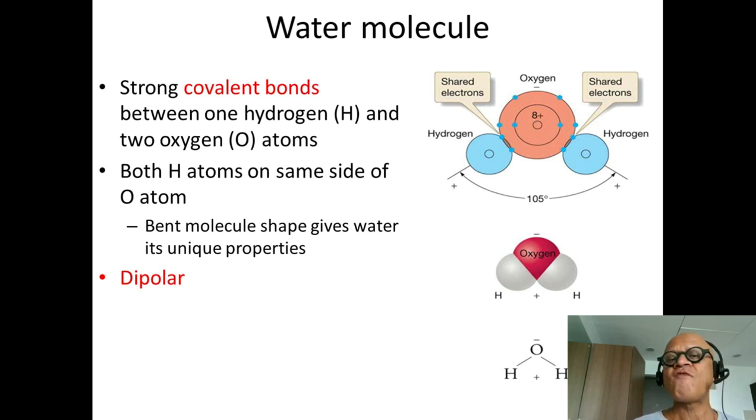However, when these covalent bonds are formed between hydrogen atoms and the oxygen atoms, you end up with these so-called two lone pairs of electrons on one side, which repel these two hydrogen atoms to one side. So you end up with this weird bent shape with an angle of about 105 degrees.